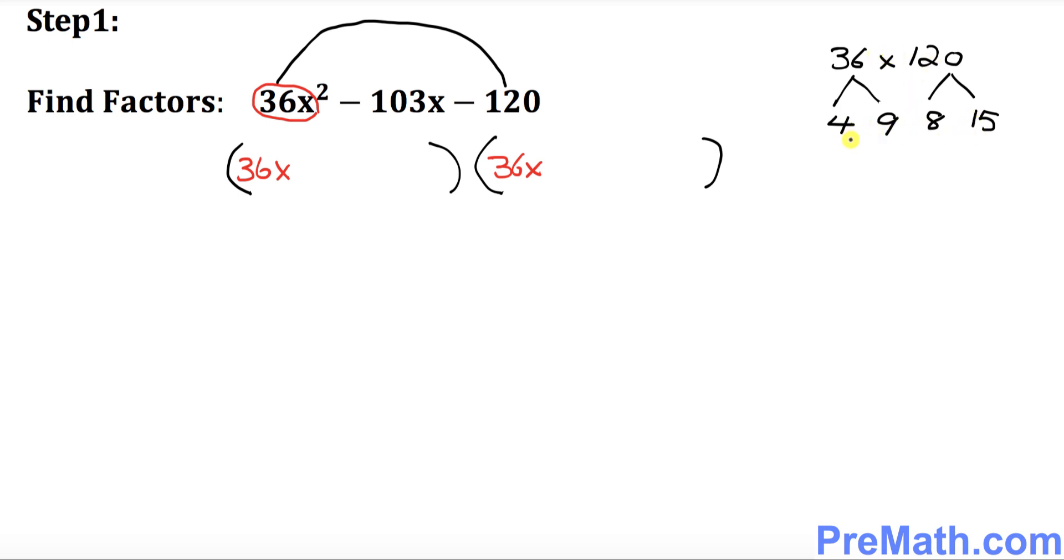This is what I'm going to do: 4 times 8 is going to be what? 32, isn't it? And 9 times 15 is what? 135. Now you can see that 36 times 120 is going to be the same number that you multiply 32 times 135, and that's going to work for us.